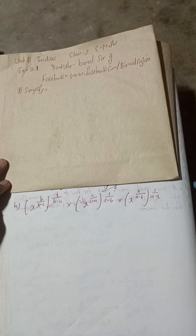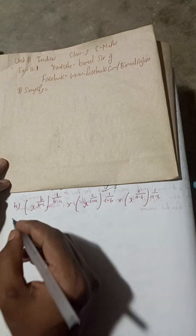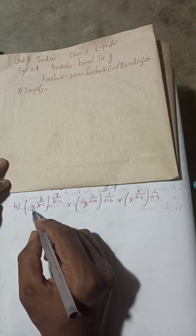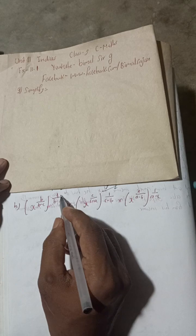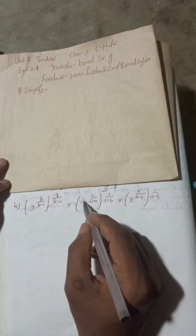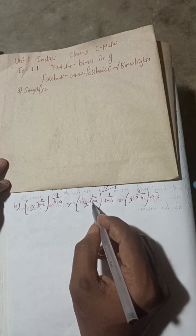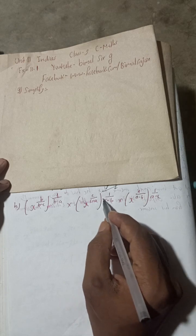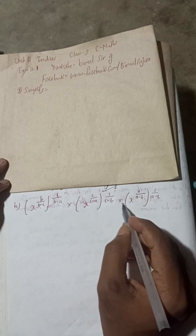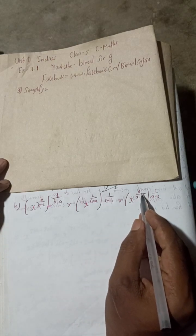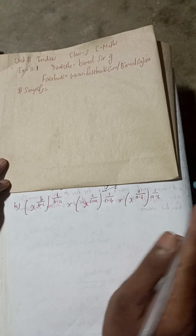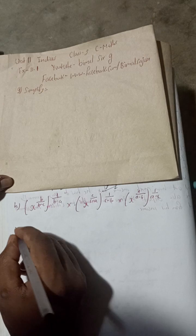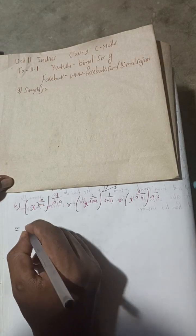Let's begin the solution. Here is the expression: x to the power B by (B minus C), whole power 1 by (B minus A), multiplied by x to the power C by (C minus A), whole power 1 by (C minus B), multiplied by x to the power A by (A minus B), whole power 1 by (A minus C).